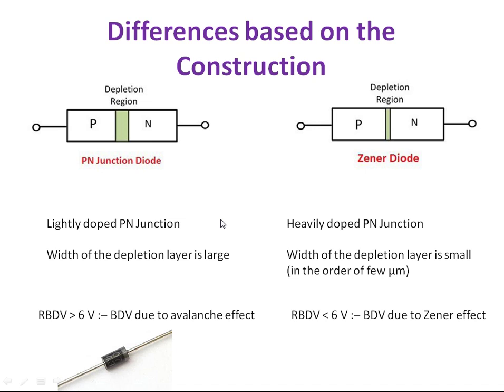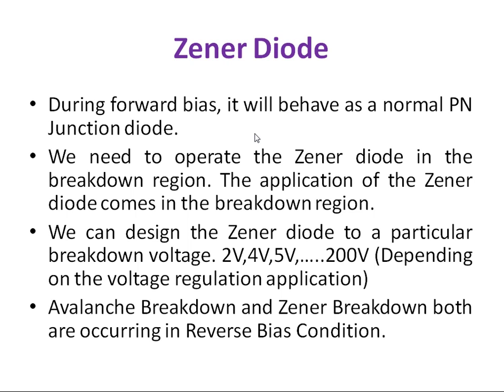This is a physical representation. During forward bias, it behaves as a normal PN Junction Diode. But the use of Zener Diode comes in the reverse bias condition. We need to operate the Zener Diode in the breakdown region. We can design the Zener Diode to a particular breakdown voltage: 2V, 4V, 5V up to 200V. Avalanche breakdown and Zener breakdown both are occurring in reverse bias condition.